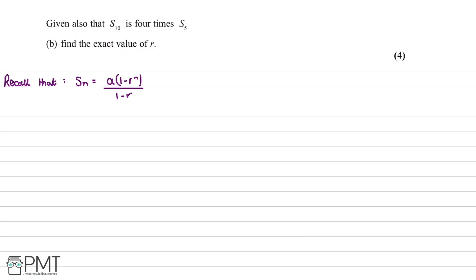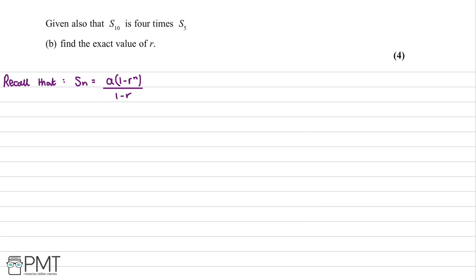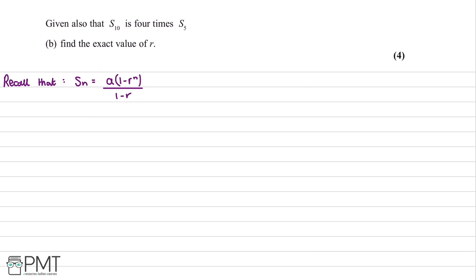In the next part, we're told the sum of the first 10 terms is four times the sum of the first 5 terms and asked to find the exact value of r, bearing in mind our formula from part a. We write this as S10 equals 4 times S5.